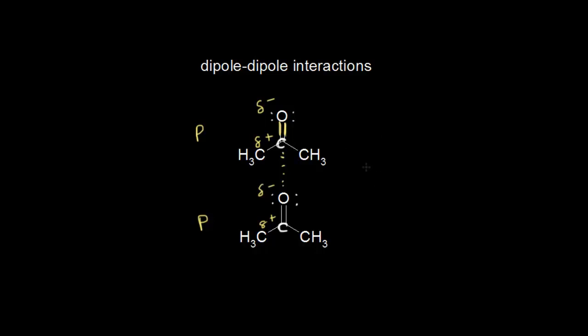The boiling point of acetone turns out to be approximately 56 degrees Celsius. Since room temperature is between 20 and 25 degrees, at room temperature we have not reached the boiling point of acetone, and therefore acetone is still a liquid. At room temperature and pressure, acetone is a liquid, and this is due to the intermolecular force of dipole-dipole interactions holding those molecules together. That intermolecular force, in turn, depends on electronegativity.